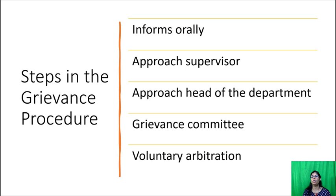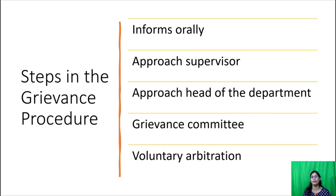If no decision is reached within a week of the management's decision being communicated to the worker, the matter proceeds accordingly. So, these are the steps to be followed in the grievance procedure — starting from oral information, if no answer is obtained at any stage, it finally reaches voluntary arbitration.